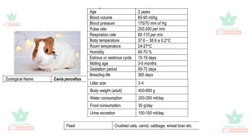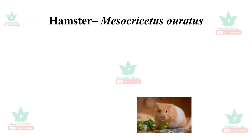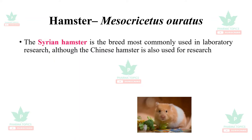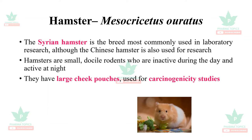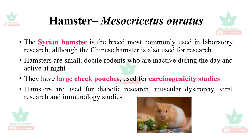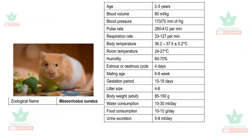The hamster, Mesocricetus auratus, is the Syrian hamster, the breed most commonly used in laboratory research, although the Chinese hamster is also used for biomedical research. Hamsters are small, docile, inactive during the day, and active at night. They have large cheek pouches that can be used for carcinogenic studies. Hamsters are used for diabetic research, muscular dystrophy, viral research, and immunology studies. The age is two to three years, blood volume is 80 ml per kg, respiration rate is approximately 127 per minute, body temperature is similar to humans, and the estrus cycle is four to five days.